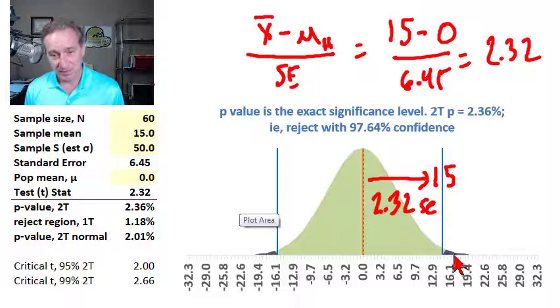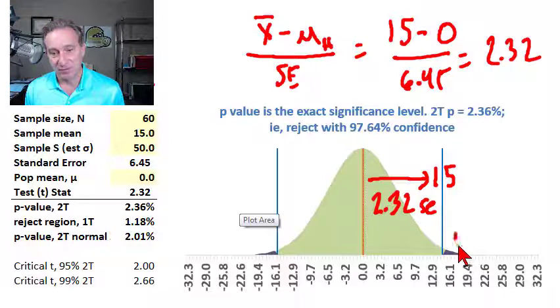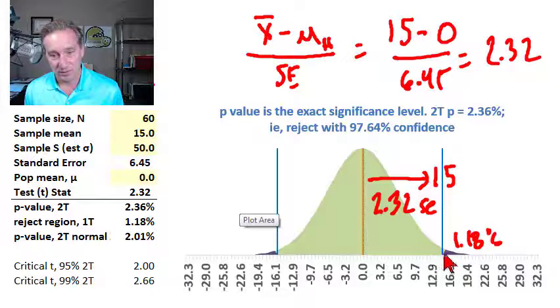which is probably the most common, it's the area in both tails here. And so you can see the p-value in this case is 2.36%.